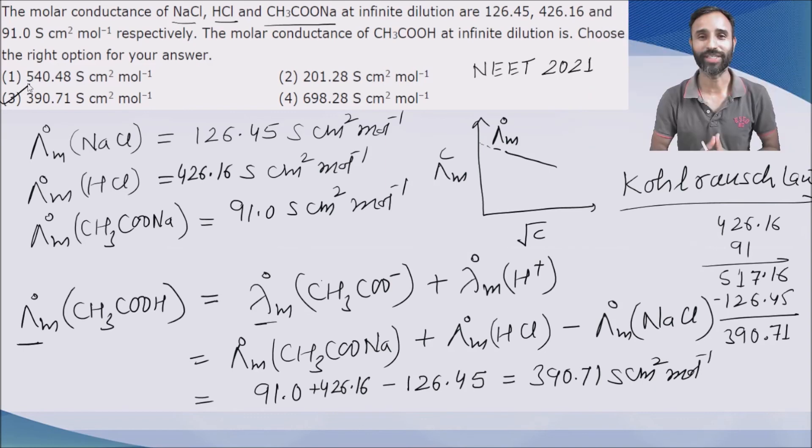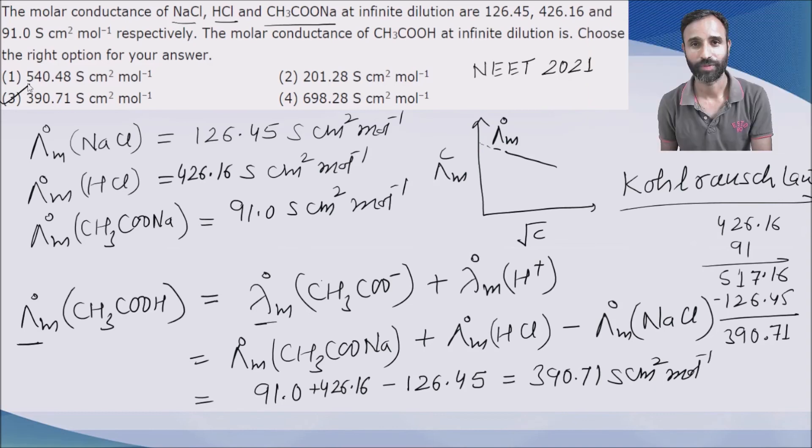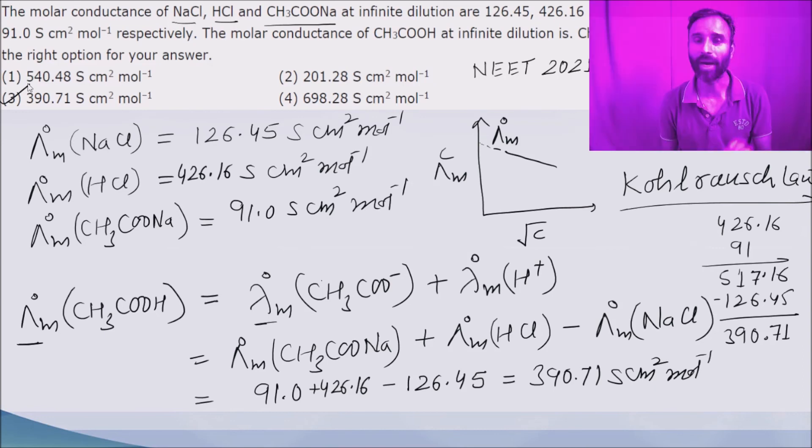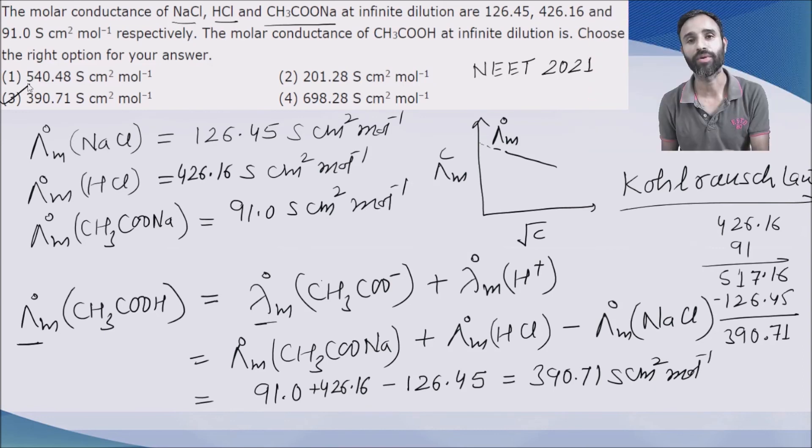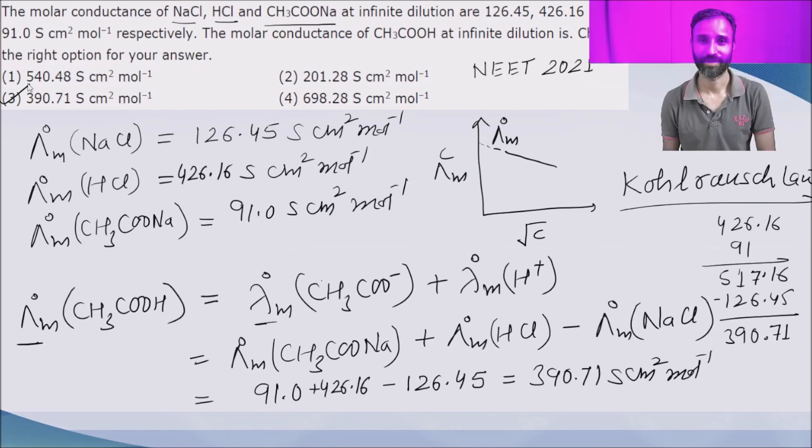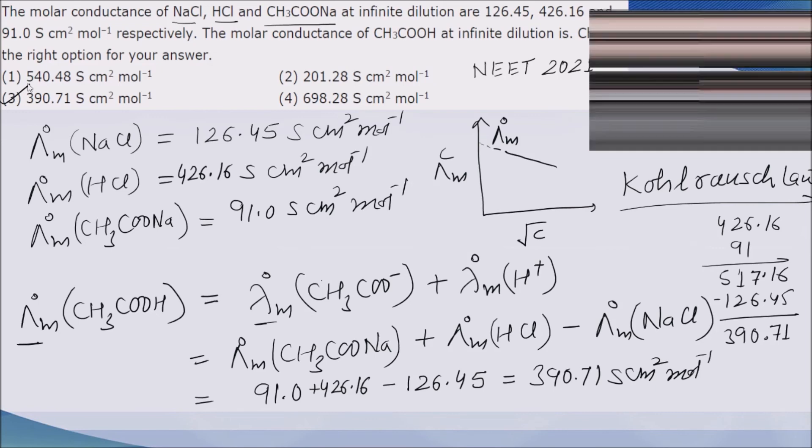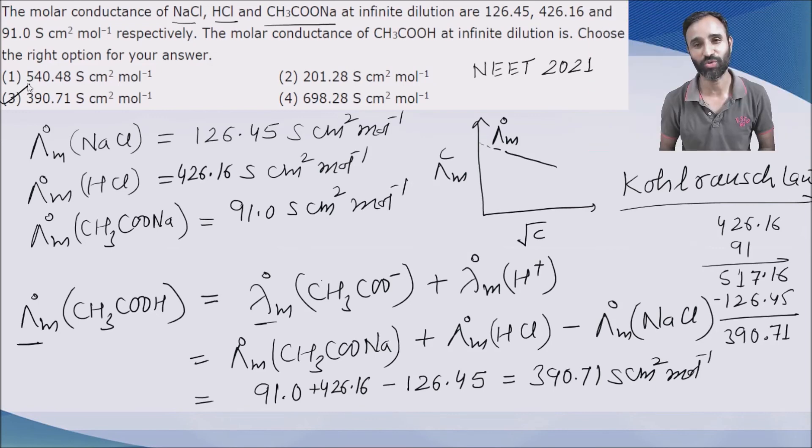That is it. Very easy question. You can do it just by using Kohlrausch law. This is the application of Kohlrausch law that we can calculate lambda m0 of a weak acid by using the lambda m0 of strong acids. Thank you so much for watching this video. Do like, subscribe and share my channel. God bless you all, happy learning.